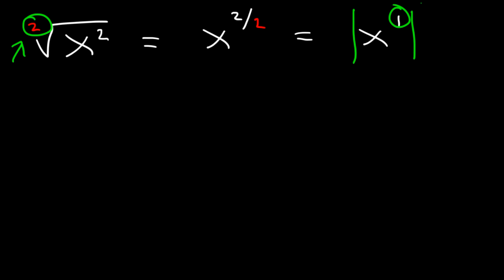And if you get an answer with an even exponent, you don't need the absolute value. The only time you need it is if you have an even index number and you get an odd exponent as your answer — then you need to enclose it using absolute value notation.